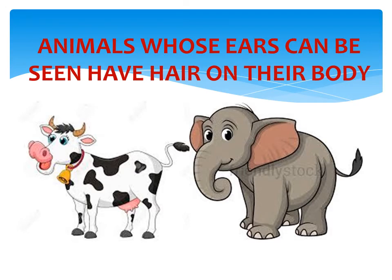In this slide I have taken pictures of two animals — cow and elephant. The heading is: animals whose ears can be seen have hair on their body. Through this slide I want to make clear that animals whose ears can be seen have hair on their body. I have taken only two examples here, but there could be many — like cat, dog, tiger, giraffe. They all have big ears as well as hair on their body.